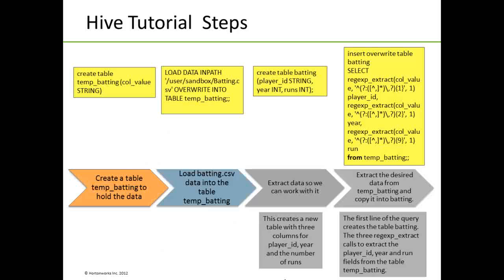Taking a look at what we are asking you to do in a linear fashion: the first thing is to use the Hive query language to create the table temp_batting. Then we populate the table by loading the data — load data from user/sandbox/batting.csv and overwrite into table temp_batting. Next, we extract the data, creating a new table called batting with three columns: player ID as a string, year as an integer, and runs as an integer. We then extract the desired data from temp_batting and copy it into batting using regular expression extract calls to extract the player ID, year, and run fields.